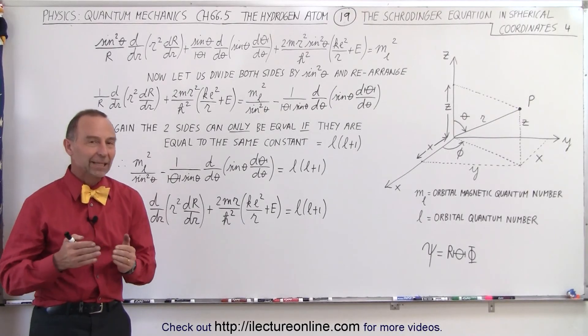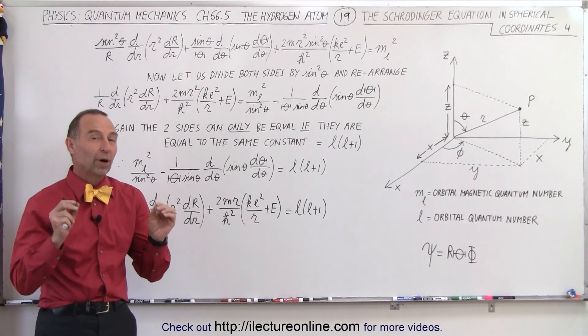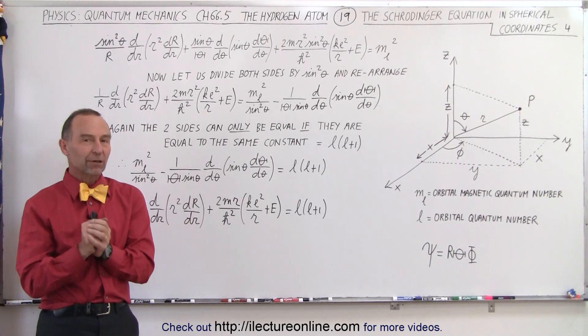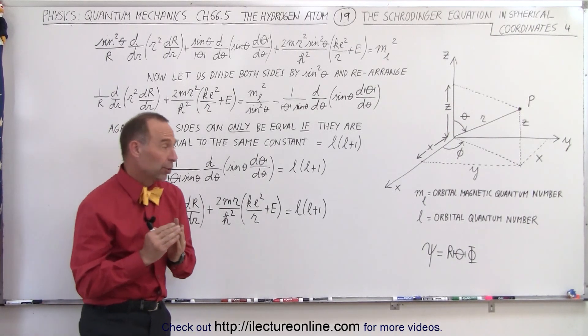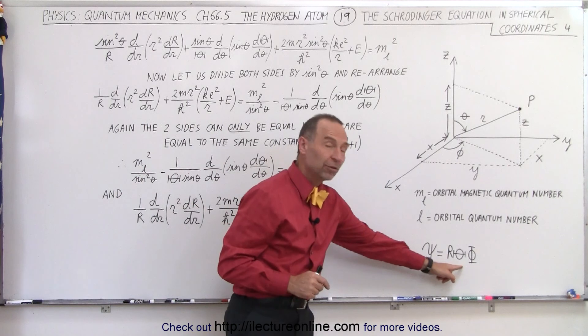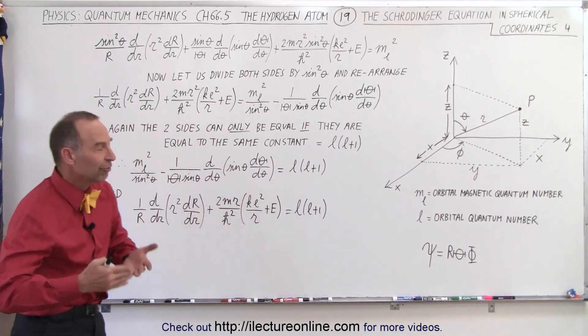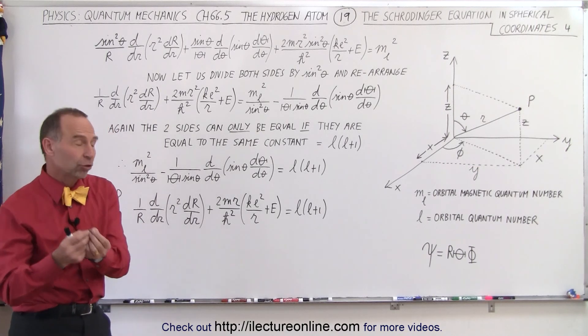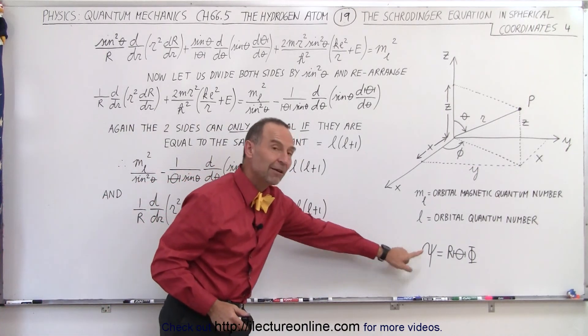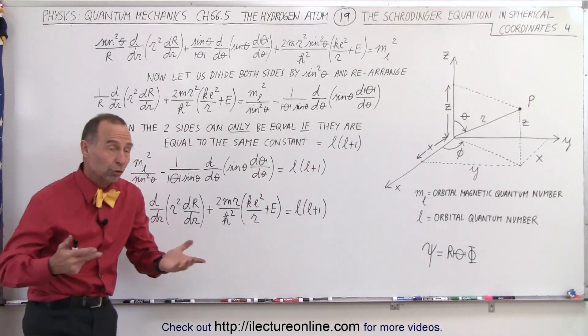Welcome to our lecture online. In the previous video, we already found one of the three differential equations we're looking for, because what we want to do is separate the variables into three different equations with three different differential equations, defining solutions that can be found for the final wave equation of the Schrödinger equation.